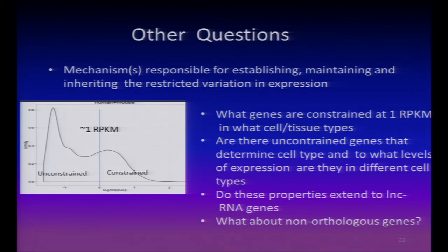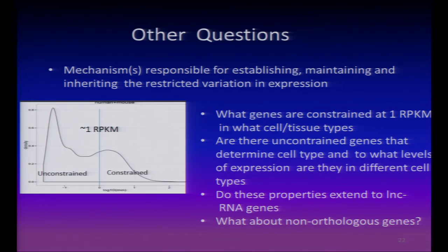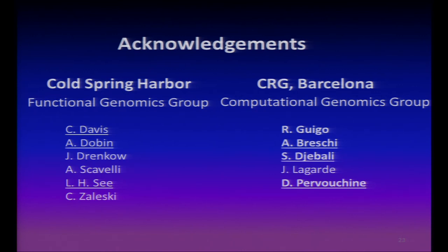Finally, open questions that remain to be resolved include: what is the mechanism responsible for the maintenance and inheritance of constraint versus variation? And does this property extend to non-coding transcripts? I can tell you that we've looked at this for the annotated ones, and the answer is yes — in the non-coding class of RNAs, there is clearly a subdivision into constrained versus unconstrained. I'd like to end on that topic and welcome your questions. Thank you.